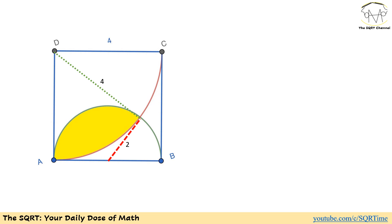The red line and the green line are making a right angle. The reason is the green line is the radius of the quarter circle and the red line is tangent to that quarter circle. Because of that, we are going to have a right angle at the point of intersection.